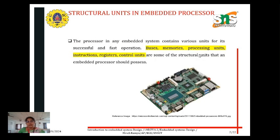The processor in an embedded system contains various units for its successful and fastest operation. The units a processor has include buses, memories, processing unit, instructions, registers, and control units — these are the structural units of an embedded processor.